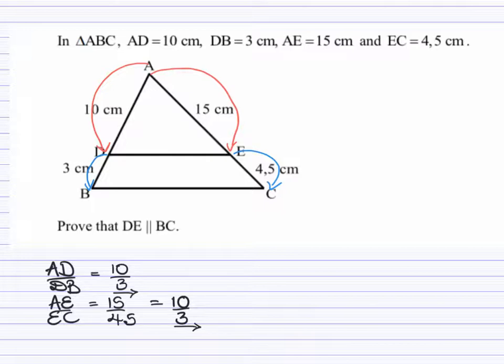You will recall from the geometry we've been doing since Grade 8, we have needed reasons for every statement we write. So for the first statement, AD divided by DB, and that being equal to 10 over 3, this was given. This was the information given in the question, so you would also write given for AE divided by EC.